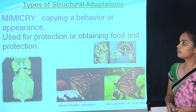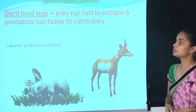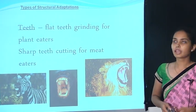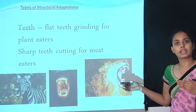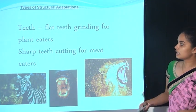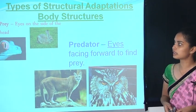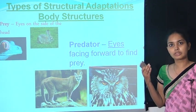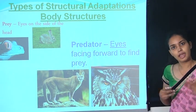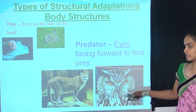Mimicry is used for protection or obtaining food. Bent hind limbs: prey can run fast to escape and predators can run faster to catch prey — used for protection and locomotion. Teeth: the teeth of herbivores and carnivores are different, adapted to their food type — sharp teeth are mainly adapted for cutting for meat-eaters. Body structure: for prey, eyes are on both sides to detect predators; for predators, eyes face forward to find prey. For example, the owl uses its sharp eyes to find its prey.